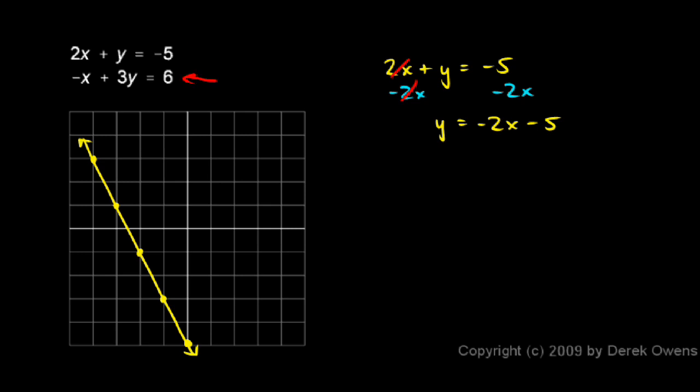Now let's look at the second equation. Negative x plus 3y equals 6, and let's graph that. I'll add x to each side, and the x's cancel on the left, and that gives me 3y equals x plus 6.